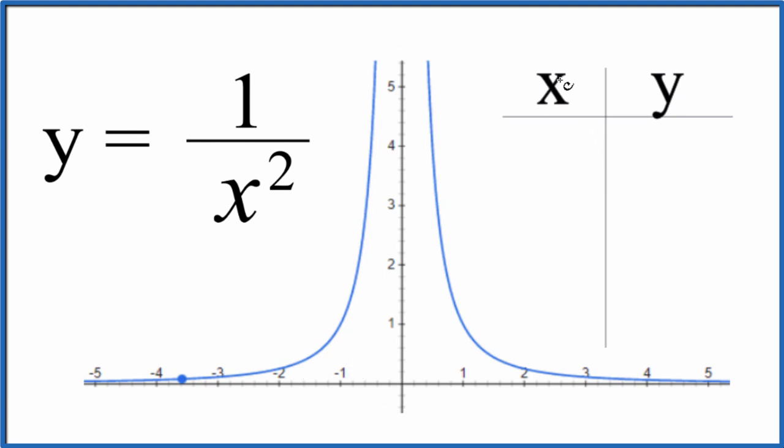So if we put negative values in for x here, we'll be graphing this side of our equation for y = 1/x². Let's just start out with negative 1. If you put negative 1 in for x, negative 1 squared, that's just 1. y equals 1 over 1, we get 1.